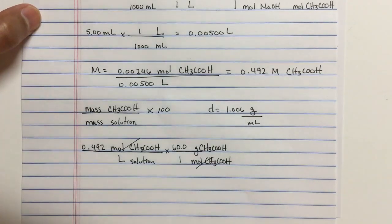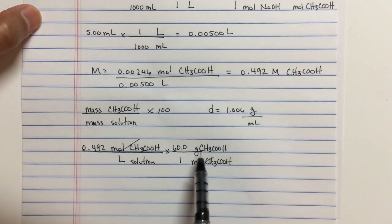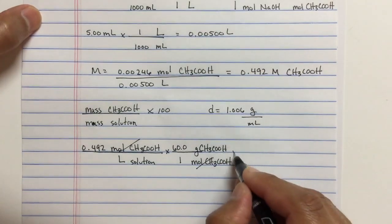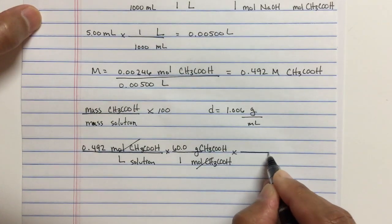And so, we've already canceled those moles. So, we have the mass of acetic acid up on top. Well, now we need to look at that volume. Let's convert the volume to a mass.